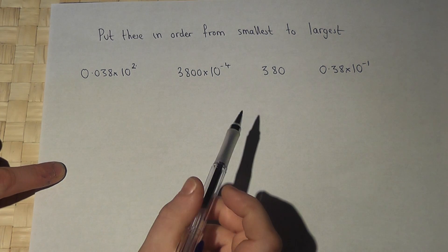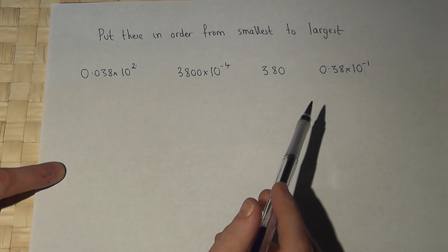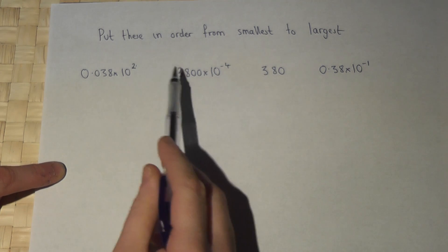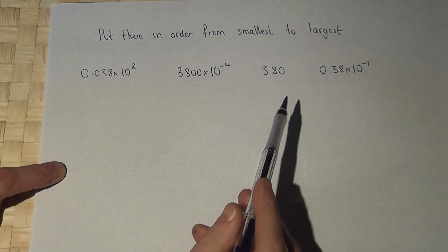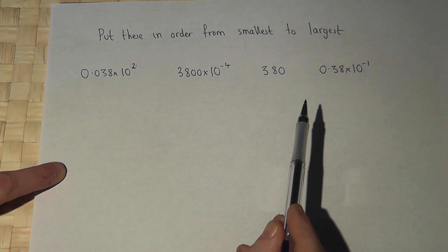This video tests an understanding of positive and negative powers, and we're asked to put these numbers in order from smallest to largest. So we'll go through each one in turn and work it out as a normal number.